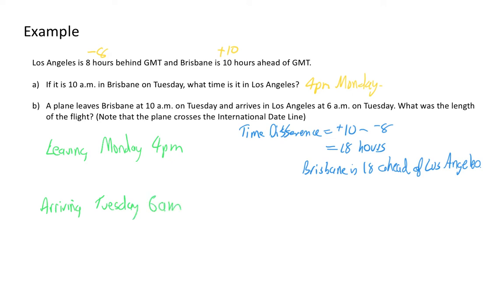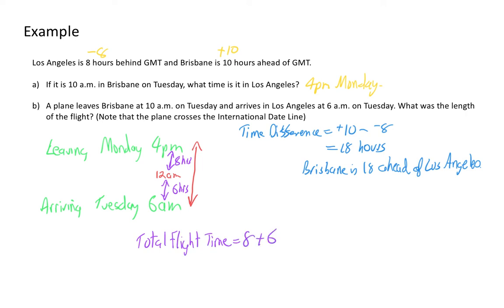We need to find the time difference between Monday 4pm and Tuesday 6am. Because the day has changed, 12am marks the changeover. So I have two sections: from 4pm to midnight, which is 8 hours, and from 12am to 6am, which is 6 hours. The total flight time equals 8 hours plus 6 hours, which is 14 hours.